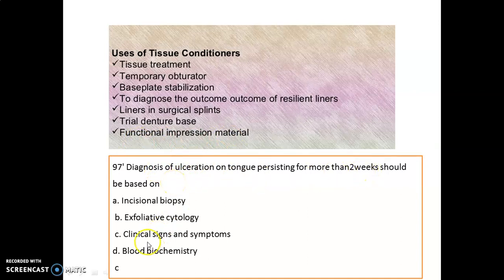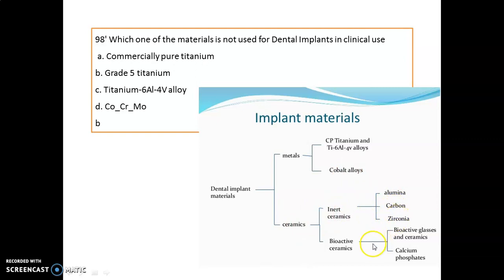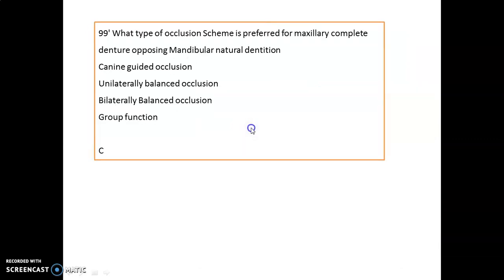If there is an ulceration on the tongue for more than two weeks, diagnosis is made with clinical signs and symptoms — don't confuse with biopsy. Which material is not used for dental implants in clinical use? That is Grade 5 titanium. Dental implants can be made of commercially pure titanium (CP titanium), titanium alloy Ti-6Al-4V (titanium, aluminum, and vanadium), cobalt alloys, and ceramics such as alumina, carbon, zirconia, and bioactive ceramics like bioactive glasses and calcium phosphates.